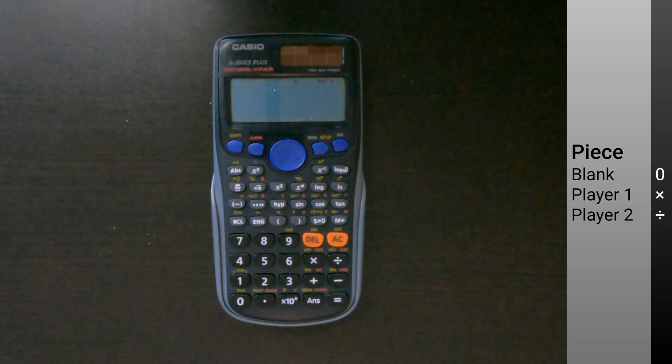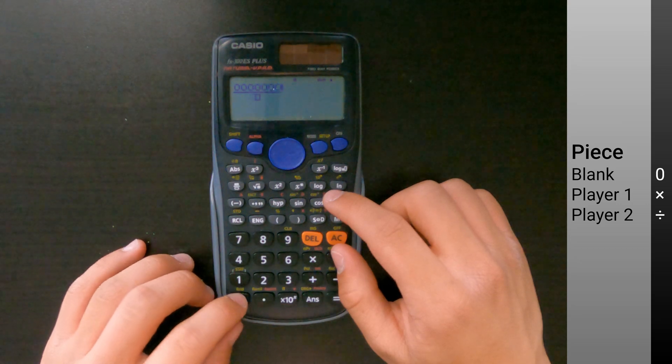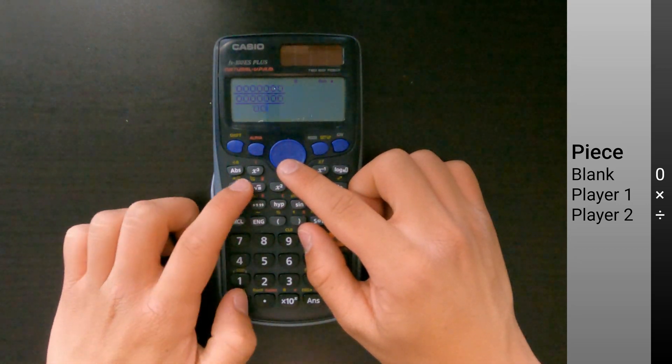The first game we have today is Connect 4, a very easy and simple game to set up and play. Press the fraction sign and type seven zeros. Repeat this until you have six rows of seven zeros.